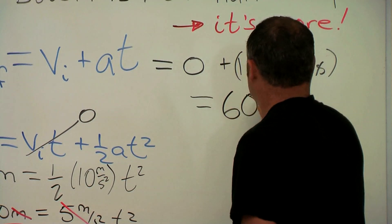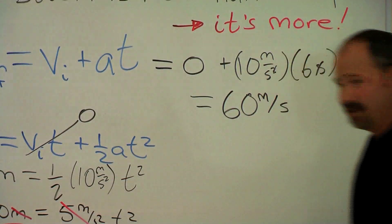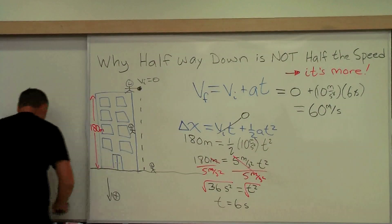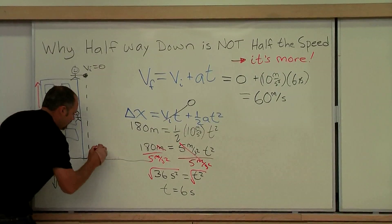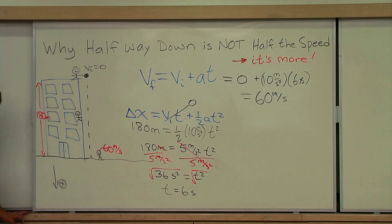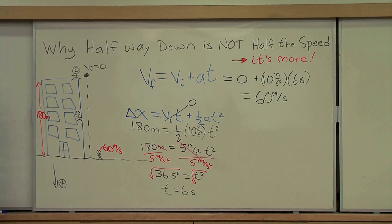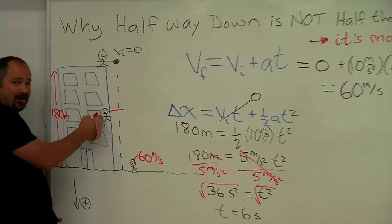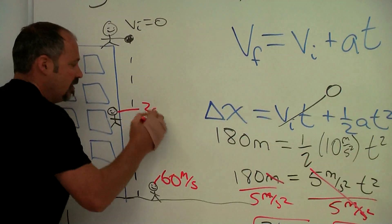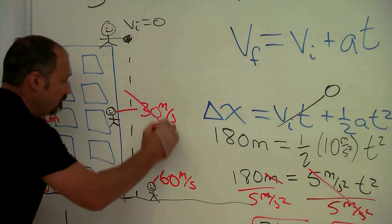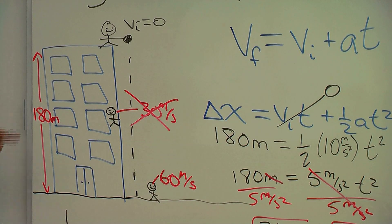So excellent. This guy here, he says, 'Hey, when the ball hits the ground just before it hits the ground, it's going 60 meters per second.' Well, you might naively think this guy's halfway down, he should see 30 meters per second, but that's not what he sees.